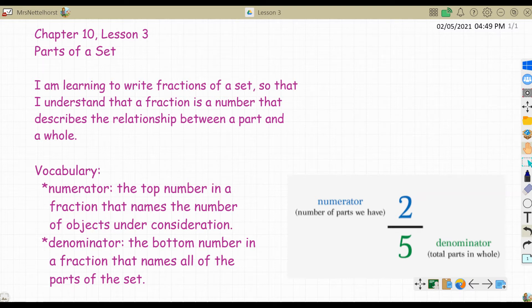So we're talking about a set. We have a set of objects. The denominator is the bottom number in a fraction that names all of the parts of the set. So the numerator is the number of parts we have, and the denominator is the total number of parts or the total number of objects.